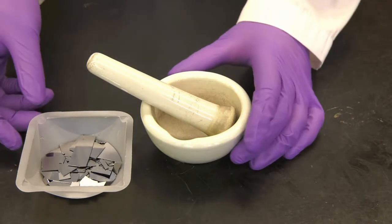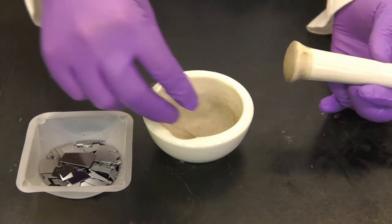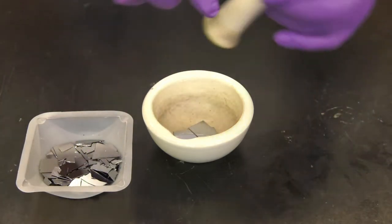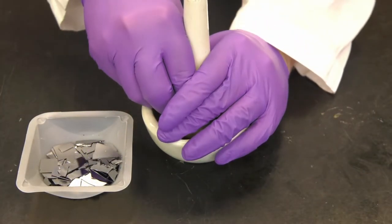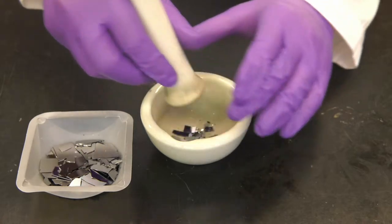The large pieces of silicon are crushed using a mortar and pestle. A mask should be worn while crushing silicon to prevent inhalation of silicon dust.